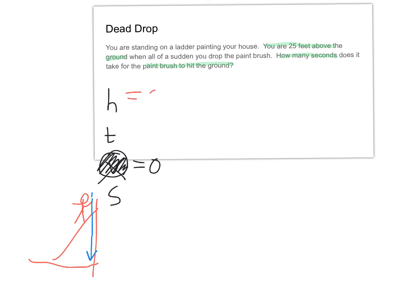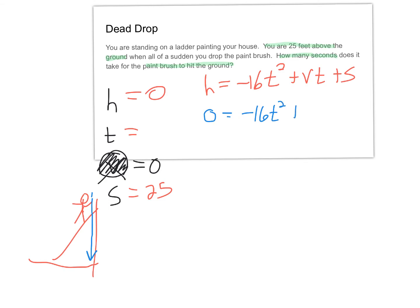Variables: H equals 0 (ending on the ground), T is unknown, V equals 0 (dead drop — no vertical velocity), S equals 25 feet. Formula: 0 equals negative 16 T-squared plus (0)T plus 25. Since zero times T is zero, that term drops out, leaving: 0 equals negative 16 T-squared plus 25.